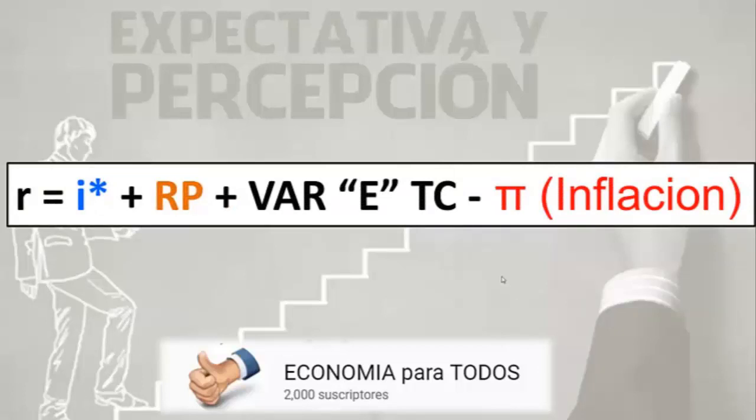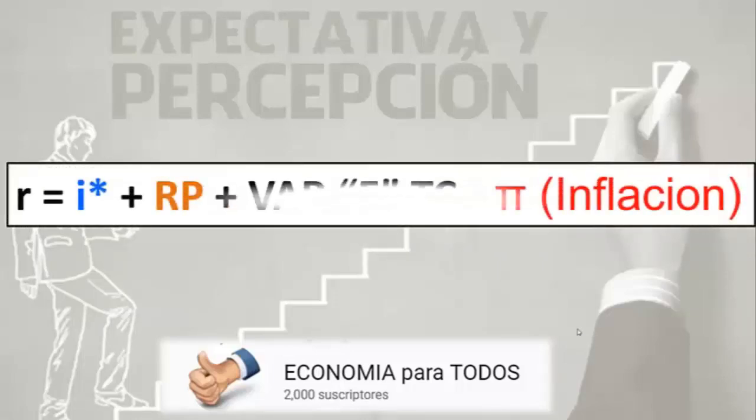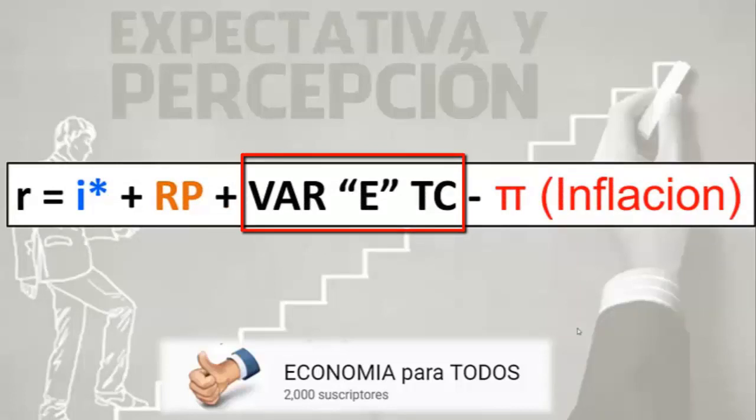Como conclusión podemos inferir que si la tasa de interés real que maneja una economía, los componentes tipo de interés que paga un bono confiable, por ejemplo Estados Unidos, el riesgo país, en este caso de Argentina, y la inflación son datos conocidos, parece ser que la variación de expectativas del tipo de cambio nominal, esto es lo que todos esperamos que pueda valer el dólar en el futuro, es la llave para saber cuál es el techo de la tasa de interés en una economía.